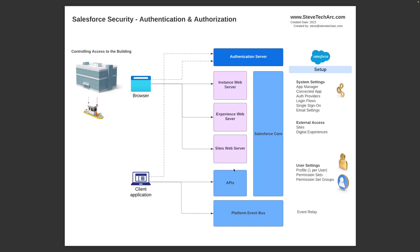When we look at what dials to turn and what settings to change, we look at the right side of the screen. App Manager and the connected app is where you can set up Salesforce as a single sign-on service provider. It also enables OAuth access for the APIs from the connected app. You can set up additional external auth providers, and you can set up login flows, which control what happens when users first log in.